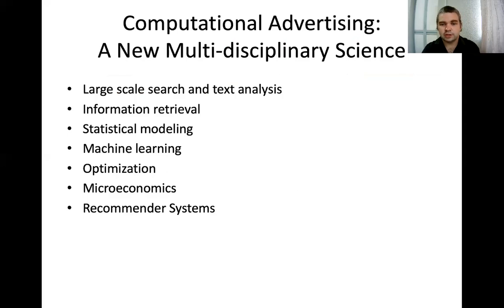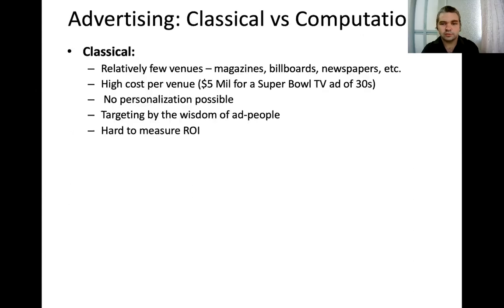Computational advertising is a multi-disciplinary science. There's a lot of natural language processing happening, information retrieval related to search ads, statistical modeling, and machine learning related to decisions on who to show the ad to. There's also optimization — both of algorithms and of ad campaigns — microeconomics, and recommender systems. Many disciplines contribute to this large area. In business schools and computer science schools, you can commonly find professors focused on different aspects of these fields.